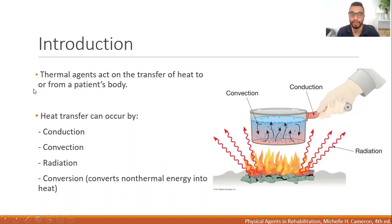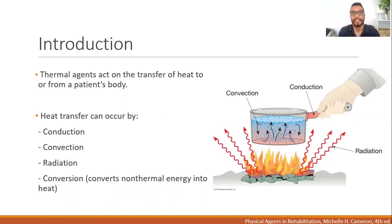Taking the example of a pan boiling water, we have fire and flames that dissipate heat. This heat is dissipated by radiation. In physical therapy, we have some examples of agents that transfer heat by radiation — for example, infrared light. Any type of light that transfers heat does so because of this mechanism of radiation.